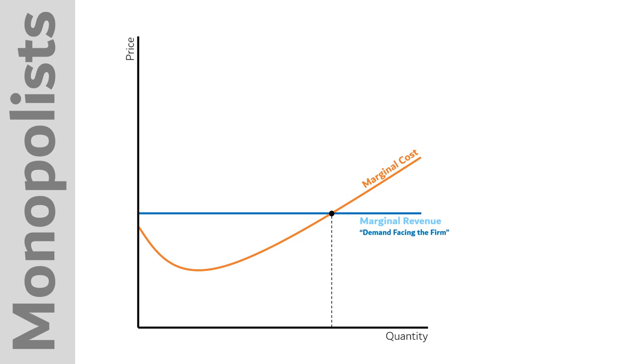Marginal costs are the costs of producing each additional unit, and marginal revenue is the money earned by selling one additional unit. We know that in order to maximize profits, a firm, any firm, whether a monopolist or not, is going to want to choose where marginal cost is equal to marginal revenue.